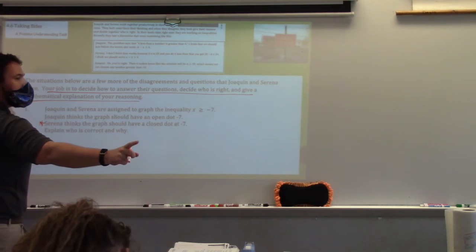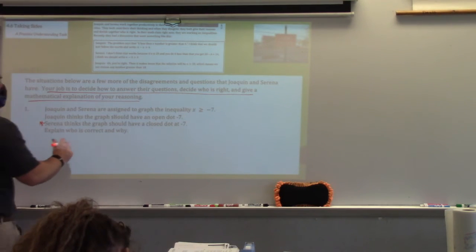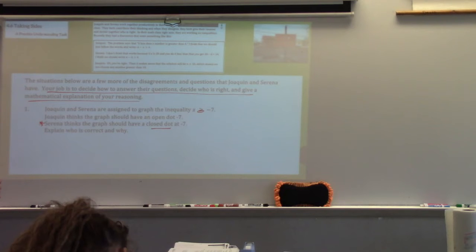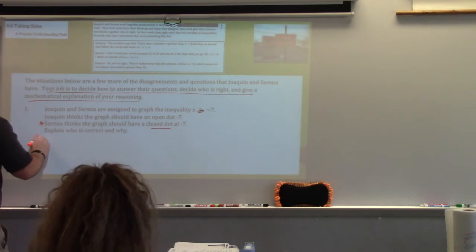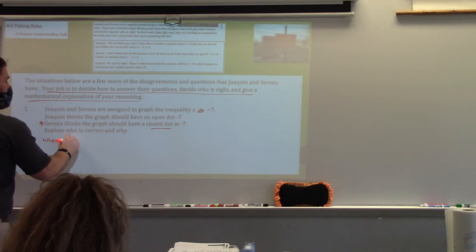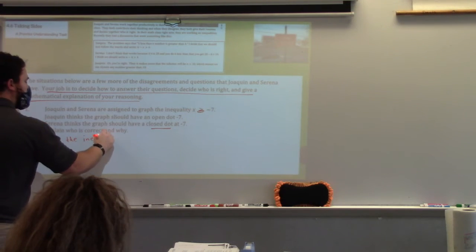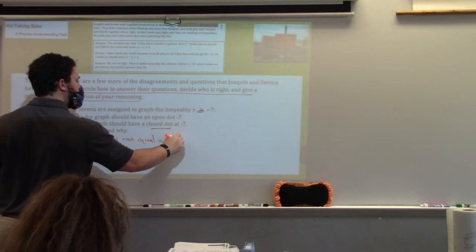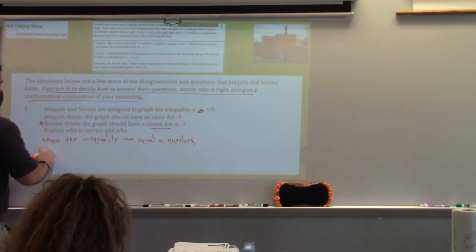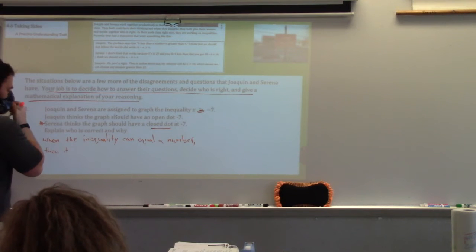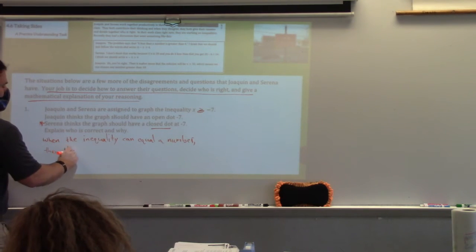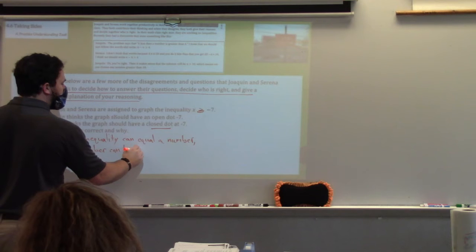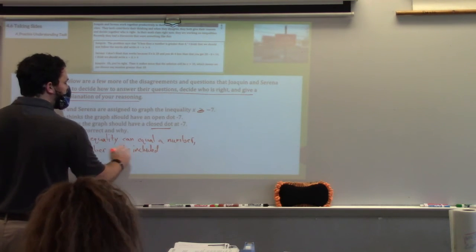So it's what? Well, why do we think it's a closed dot? Okay, so when it can equal it, we're looking at the idea of a closed dot. Does that make sense? So when the inequality, equality can equal a number, then the number can be included. It's the idea of including that number that causes it to be a closed dot.